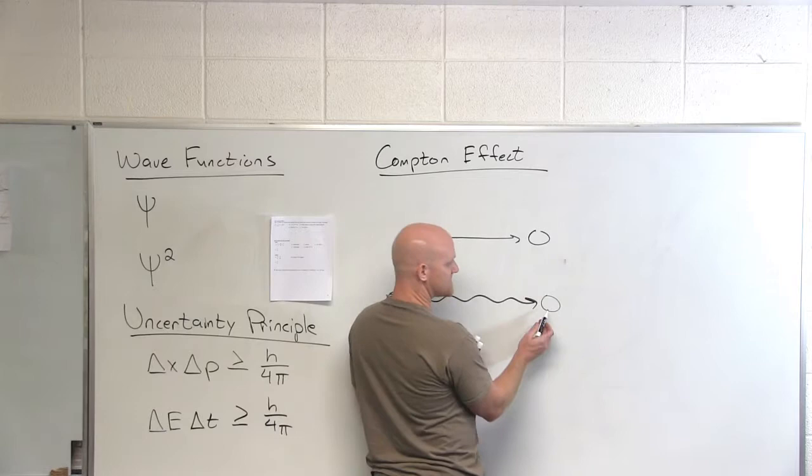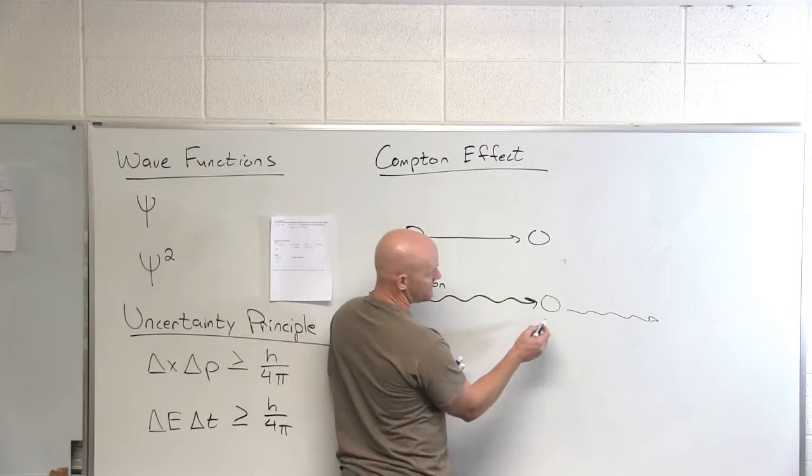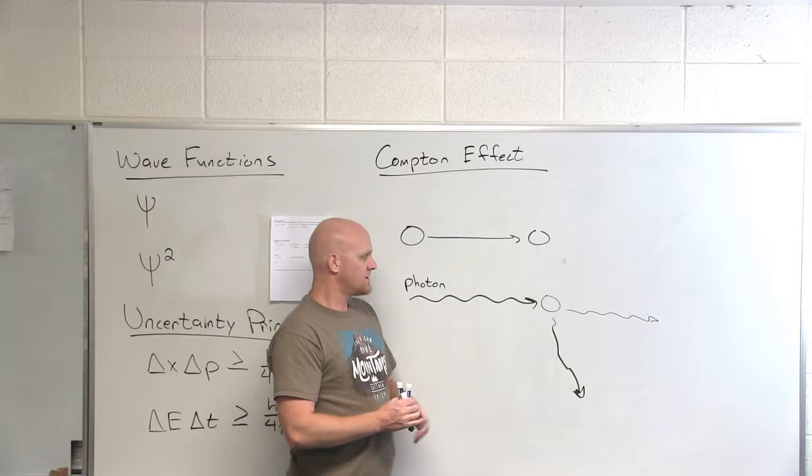As this photon gets scattered, let's say it just barely nicks this thing and so it gets scattered off at that angle. Or if it really hits it, maybe it gets scattered off at this angle. So it turns out in which case would we expect the photon to have lost more momentum to this atom?